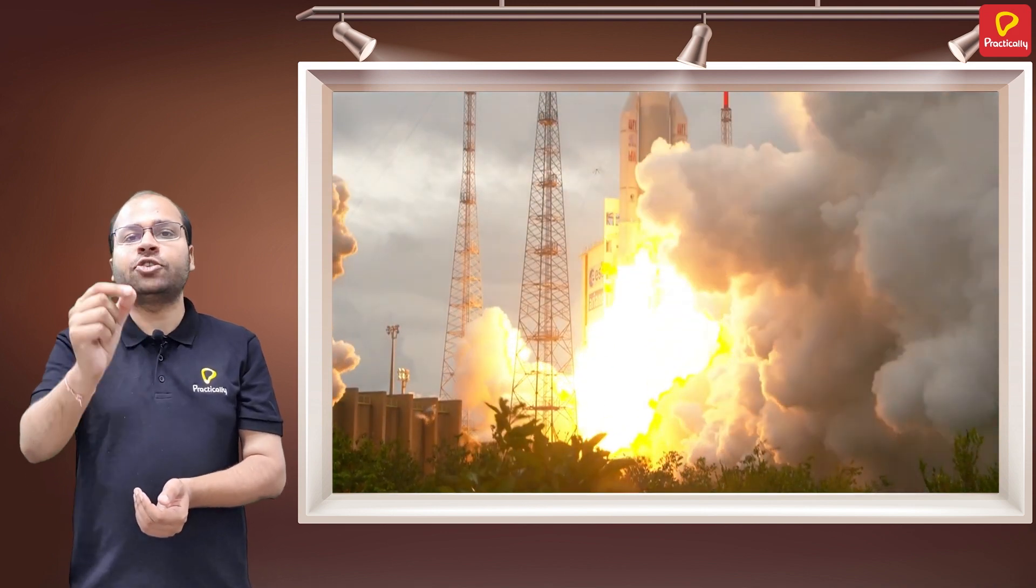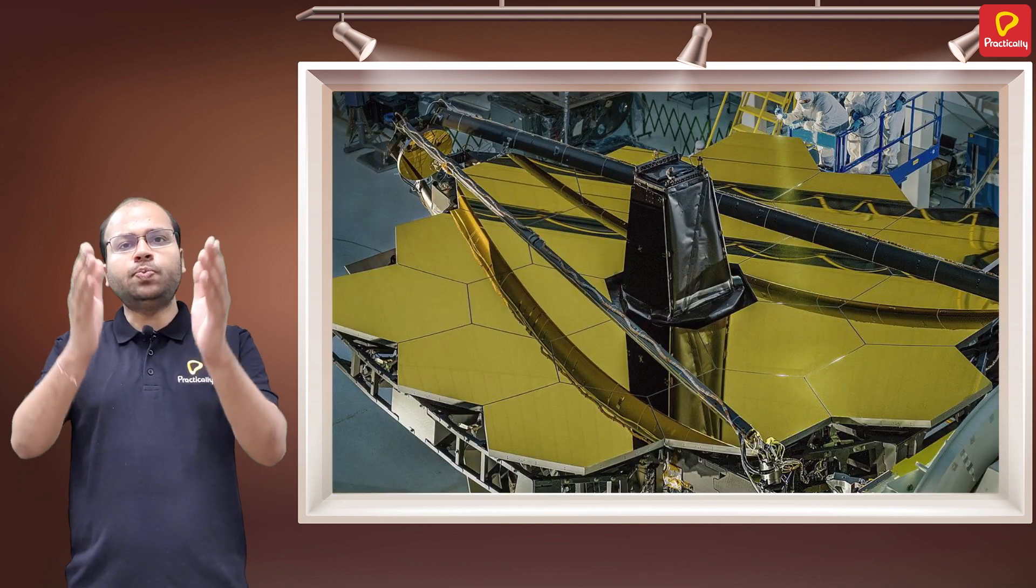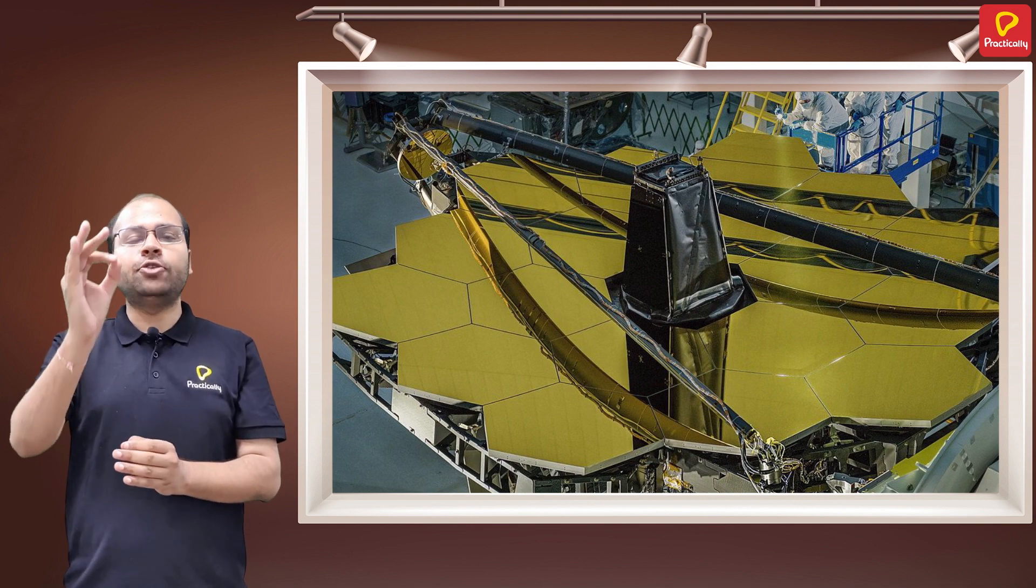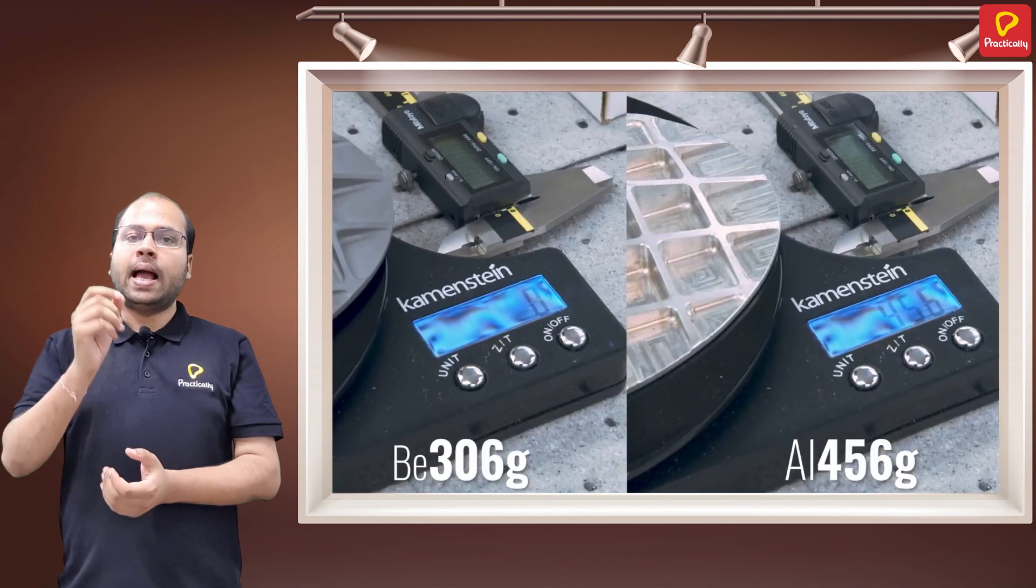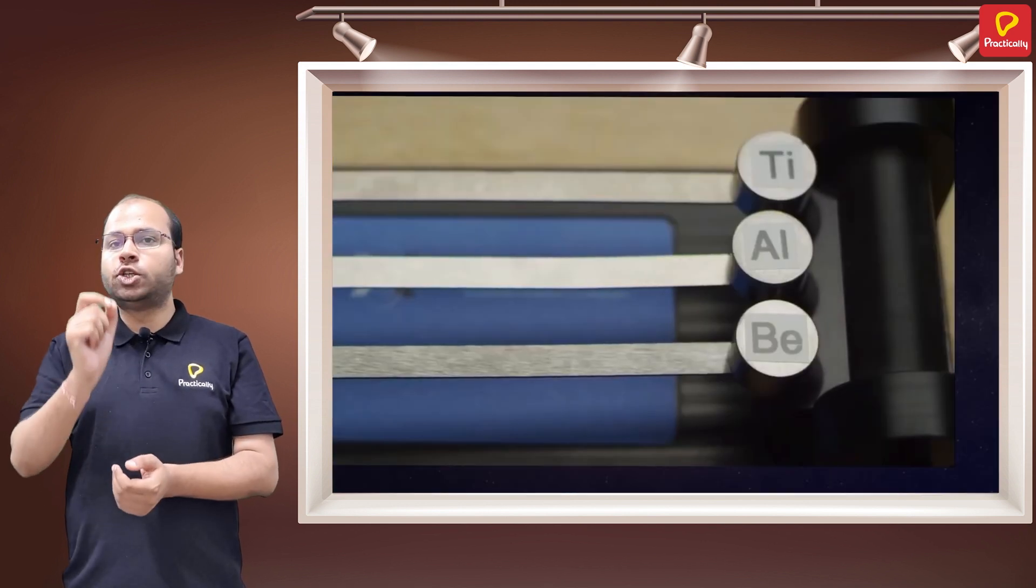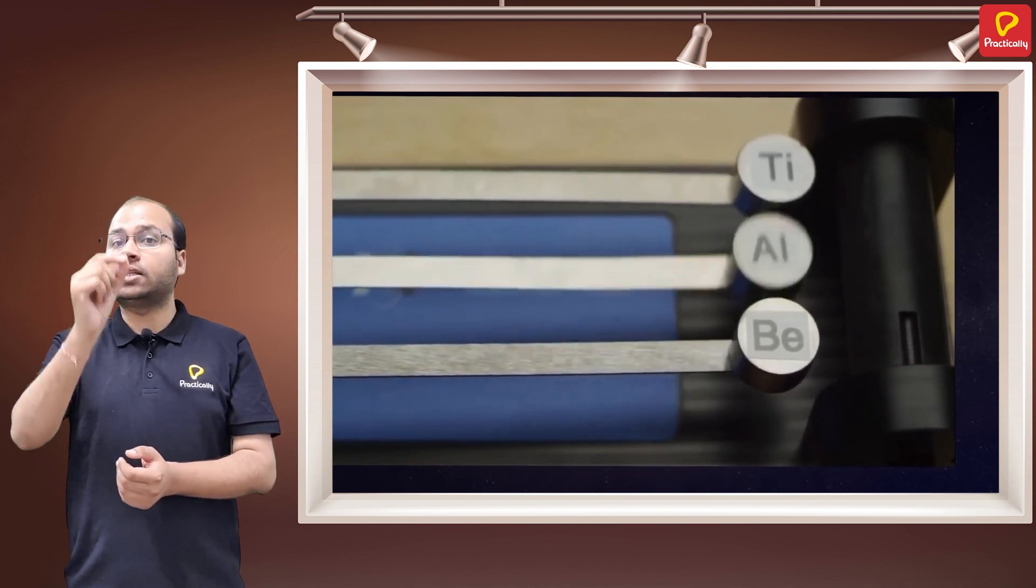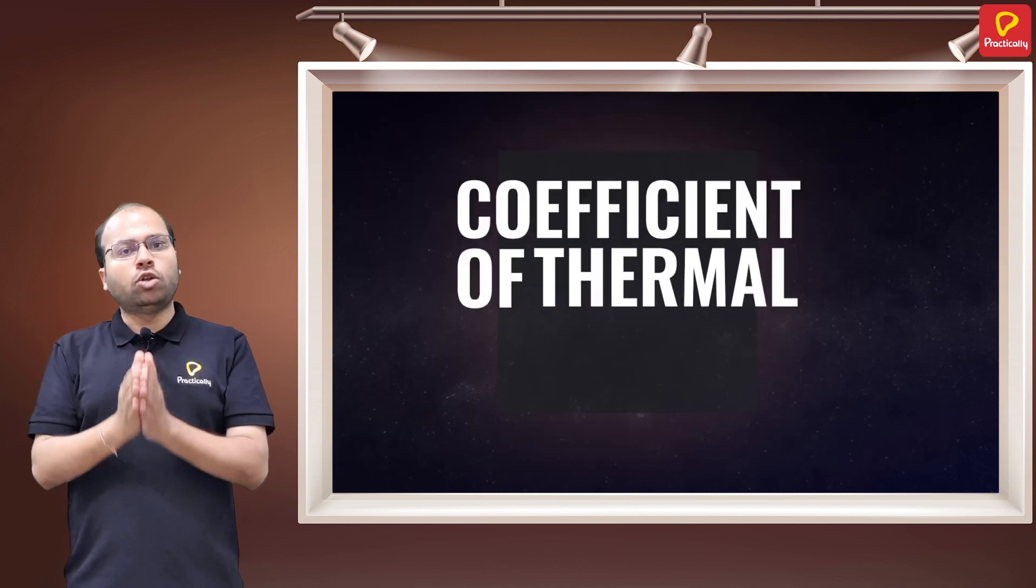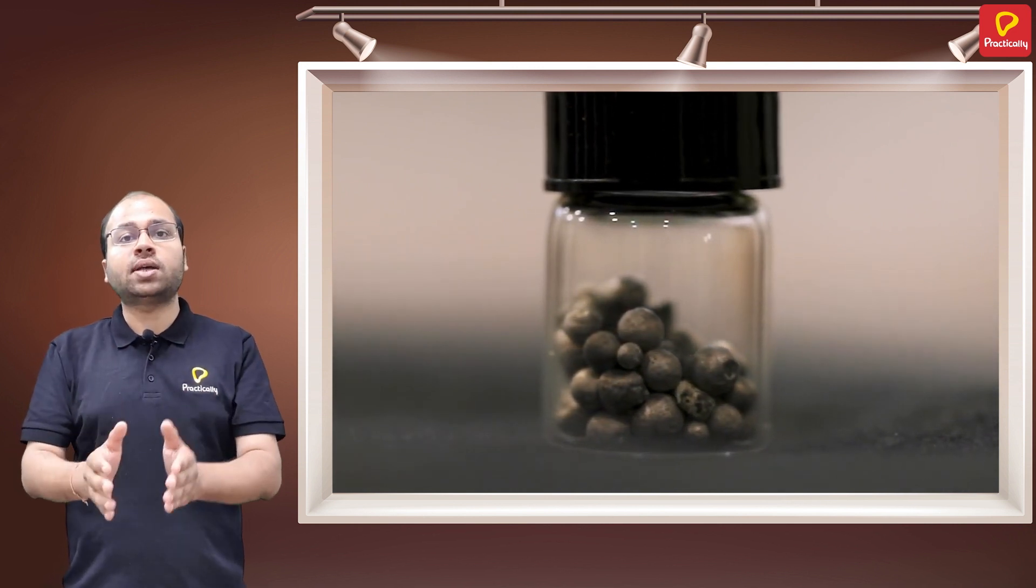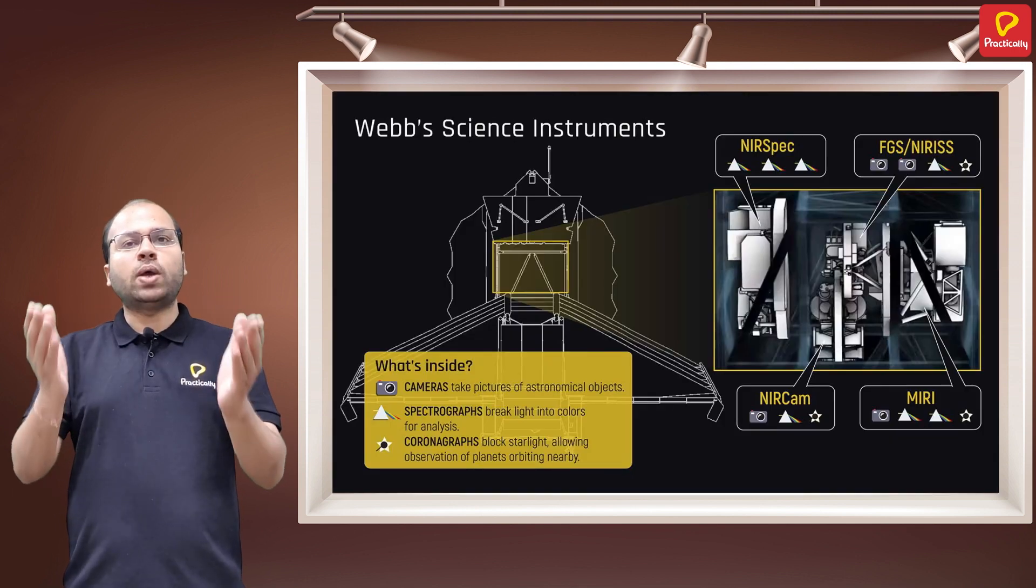So it is the biggest and the most sensitive mirror ever sent into space. The gold plating is done to improve the reflection of infrared light, and the reason behind the use of beryllium is due to it both being lightweight and strong at the same time. Also, beryllium is good at holding its shape across a wide range of temperatures.